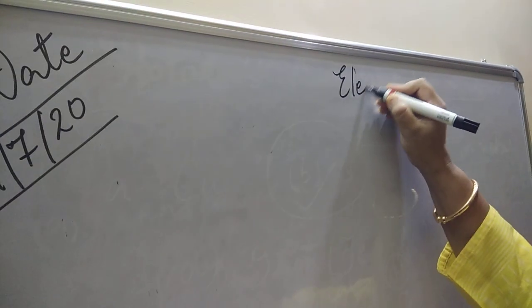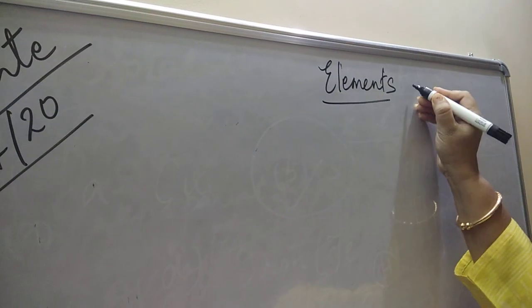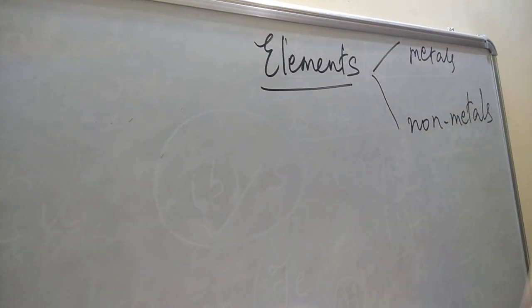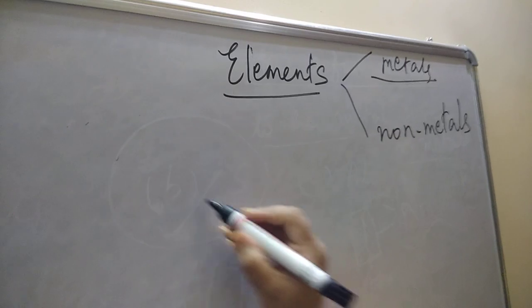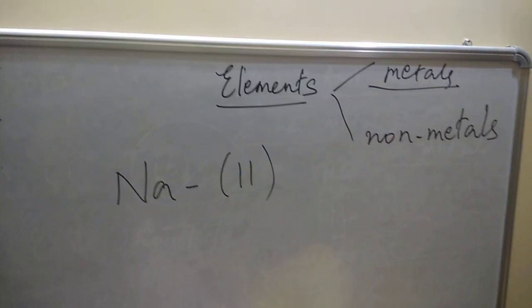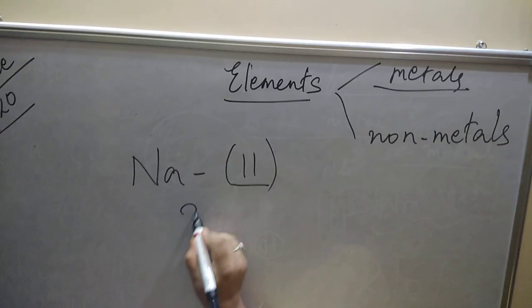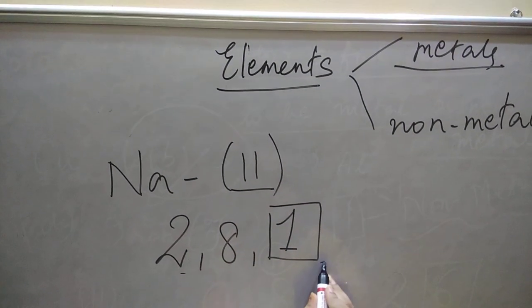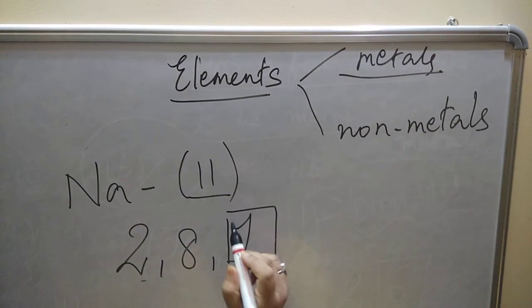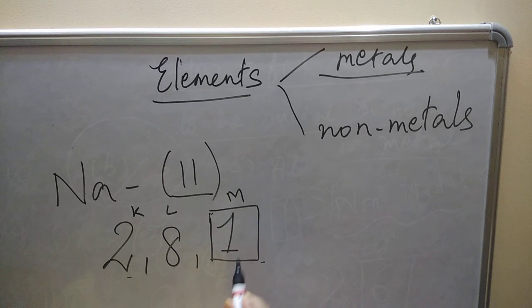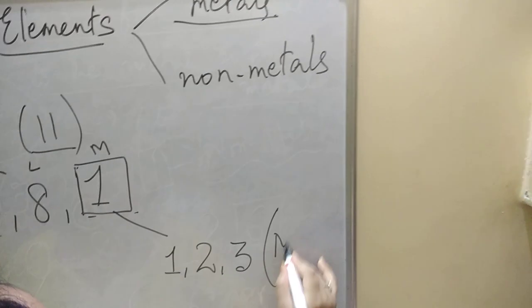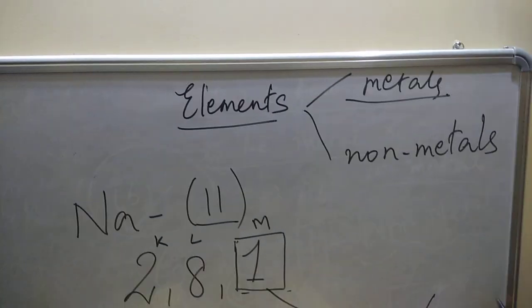Children, one thing to make clear in your mind: how can you consider elements to be metals or non-metals? For metals, look at the outermost shell. For example, sodium — atomic number 11. If I distribute 11 electrons, it comes to 2, 8, and 1. If the outermost shell has 1, 2, or 3 electrons, they are considered to be metals. Always remember this.